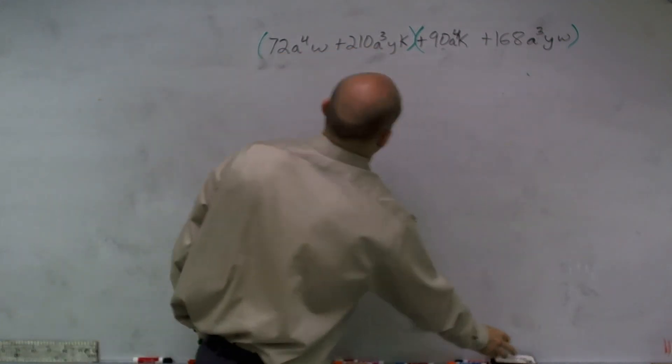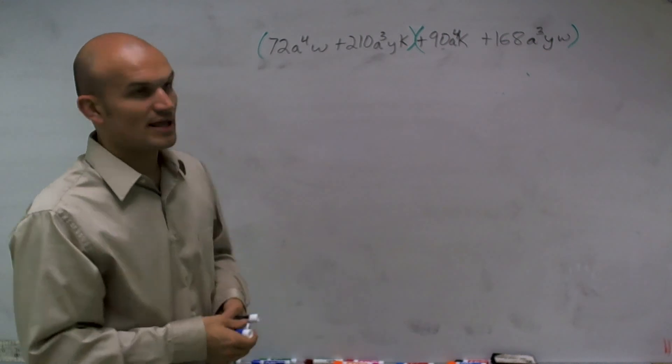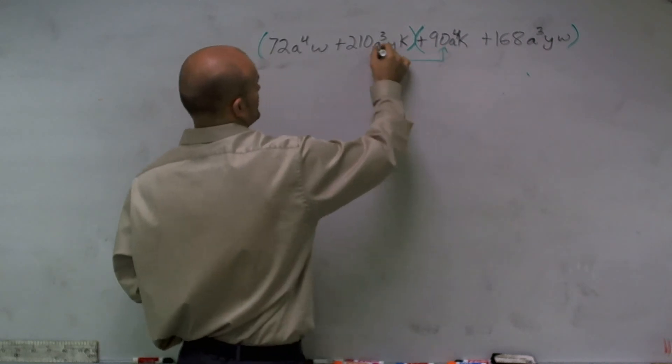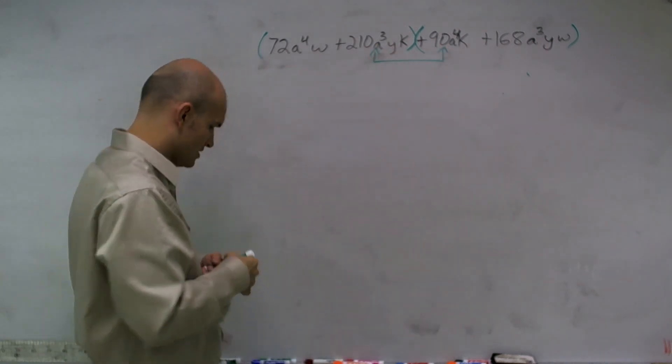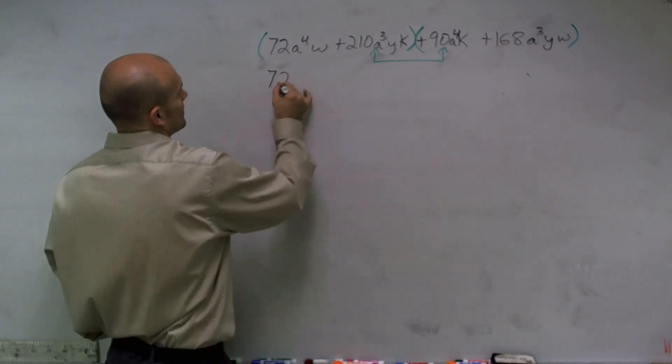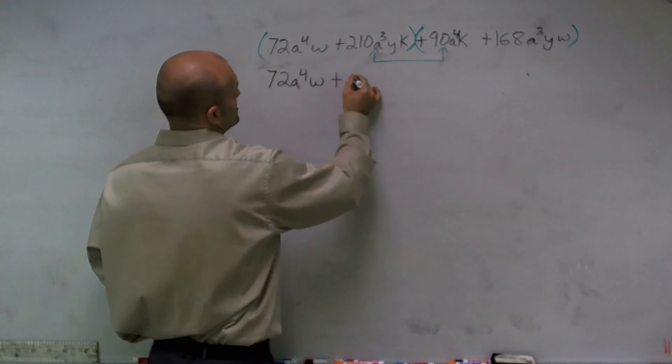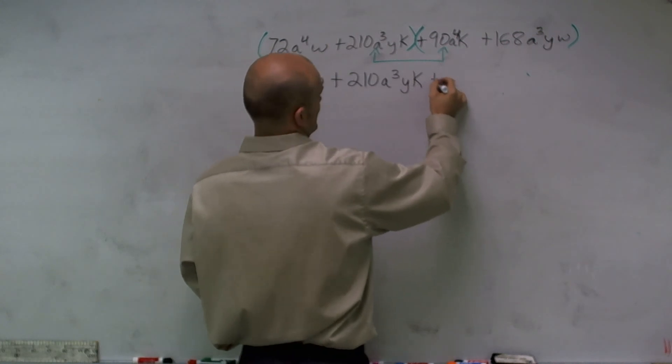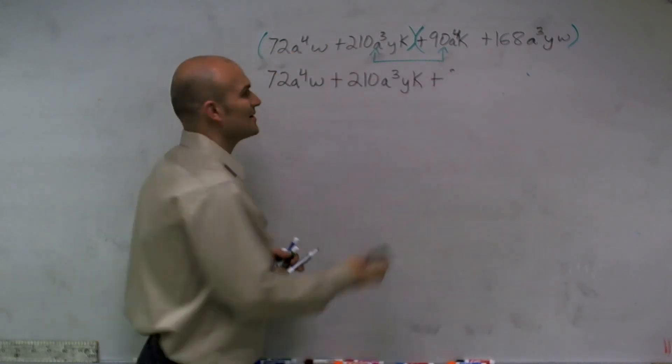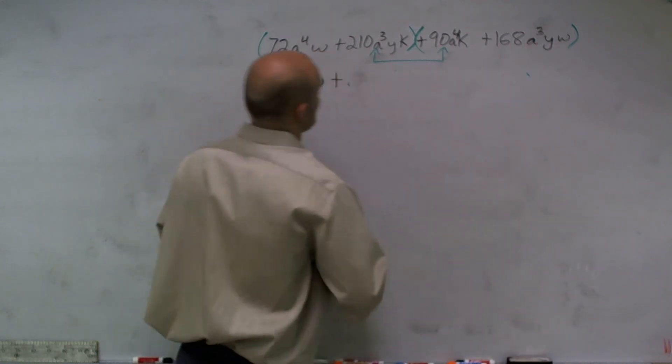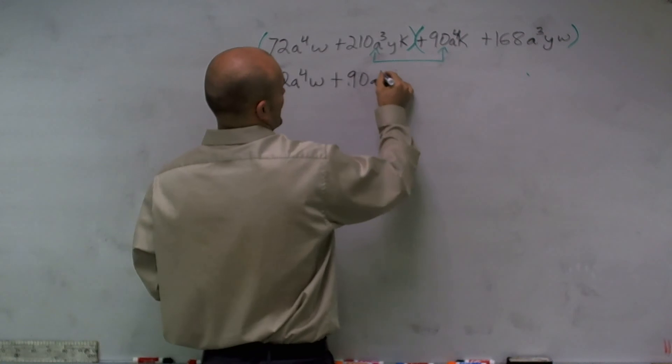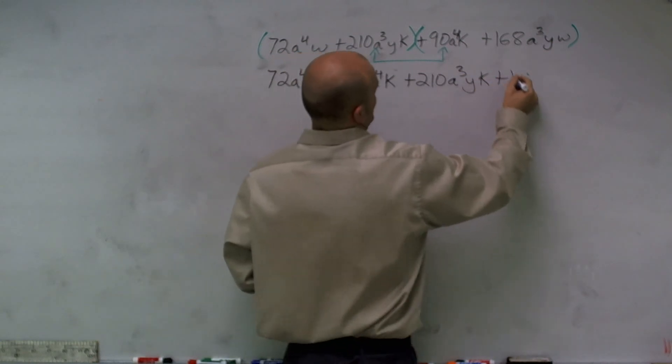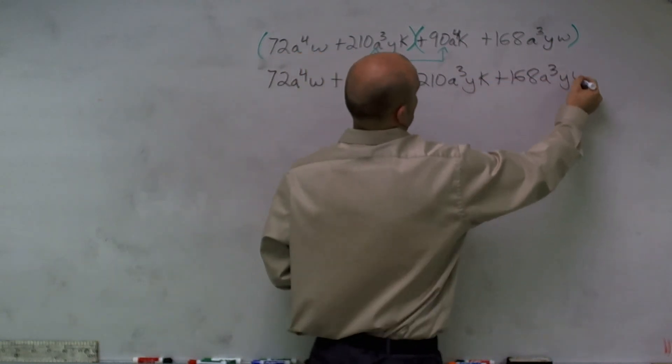So what we're going to do is think about ways I can rearrange these terms so that I can factor them out together. A quick, easy way to do it is just interchange your middle terms. So now when I write my equation out, I have 72a⁴w + 90a⁴k + 210a³yk + 168a³yw.